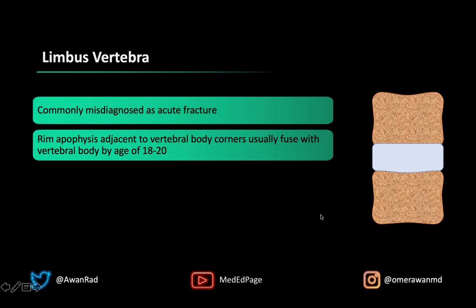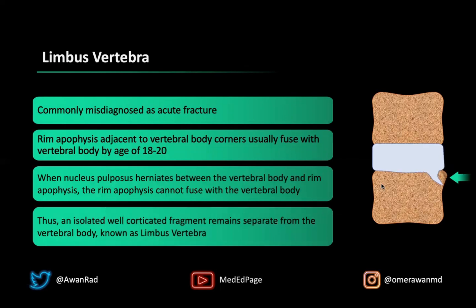In cases of limbus vertebrae, the nucleus pulposus of the intervertebral disc herniates between the rim apophysis and the vertebral body, preventing the fusion of the rim apophysis with the parent vertebral body. It then becomes separate from the vertebral body. This is known as a limbus vertebrae, and it occurs typically after the age when fusion should have already happened — around 18 to 20 years.